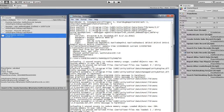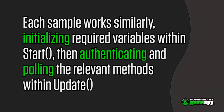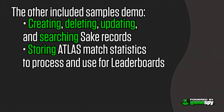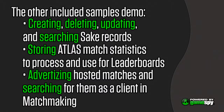You can see the results of the Saki query since we just ran GetMySakiRecords.cs. Each sample works similarly, initializing all of the necessary variables within the start method, then authenticating and polling the relevant methods within update. The other included Saki samples demonstrate creating, deleting, updating, and searching Saki records. The Atlas samples show how to store match statistics to be processed and used for leaderboard queries. The Matchmaking samples show how to advertise a match as a host or search for potential hosted matches in order to join one as a client.